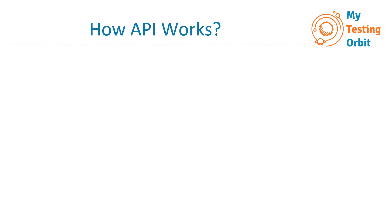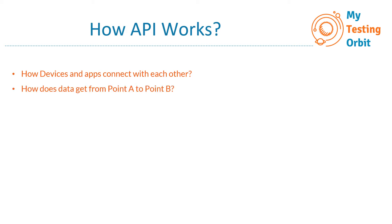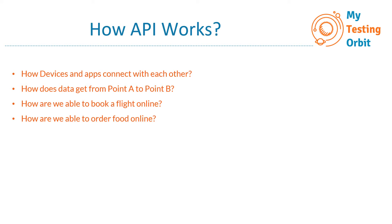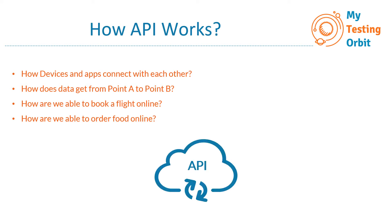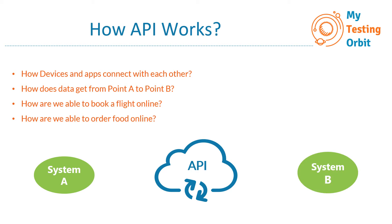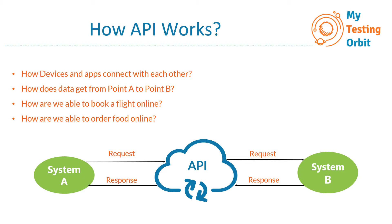Now let's have a look at how APIs work — how devices and apps connect with each other, how data gets from point A to point B, how we are able to book a flight online, how we are able to order food online. All this is possible through APIs. API is what connects the whole world and what's happening behind the scenes making all the interactivity possible. So if we have two systems, system A and system B, APIs are basically acting as a messenger, taking the request from system A to system B, and then getting the response from system B and taking it back to system A. Whenever you think of API, just consider it as a messenger to deliver data.